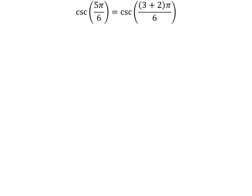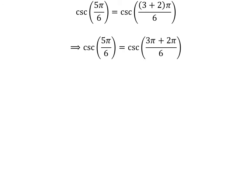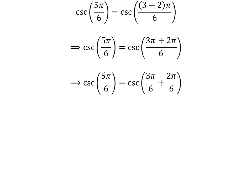Here is the second method to find the value of cosecant of 5 times pi upon 6. We know 3 plus 2 is equal to 5, so cosecant of 5 times pi upon 6 is equal to cosecant of 3 plus 2 times pi upon 6. Expanding the numerator, we get cosecant of 5 times pi upon 6 is equal to cosecant of 3 times pi plus 2 times pi upon 6. The fraction 5 times pi upon 6 can be expressed as the sum of two fractions: 3 times pi upon 6 and 2 times pi upon 6. Cancelling out the common factor gives us cosecant of 5 times pi upon 6 is equal to cosecant of half of pi plus pi upon 3.